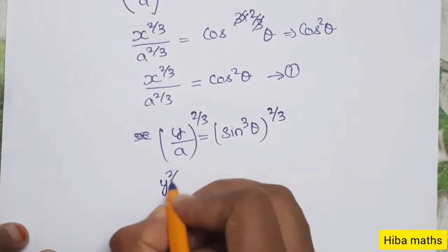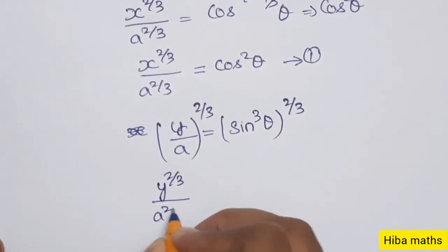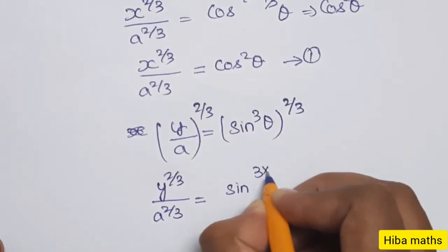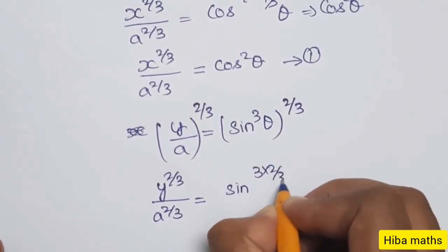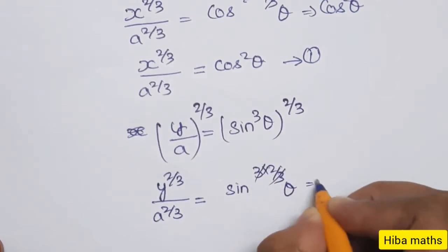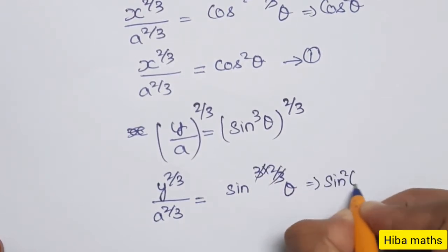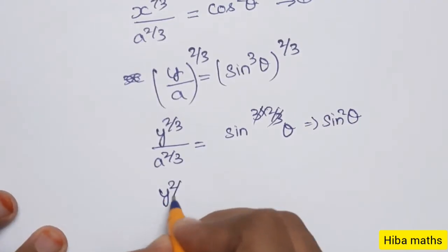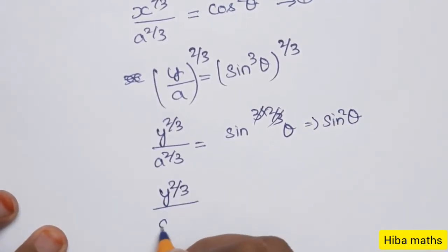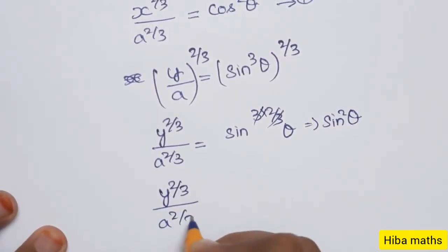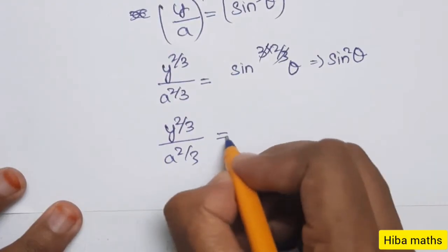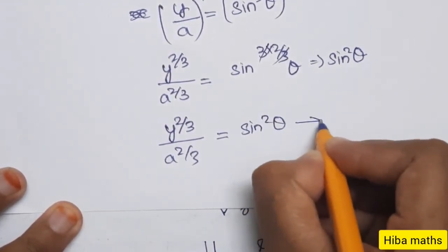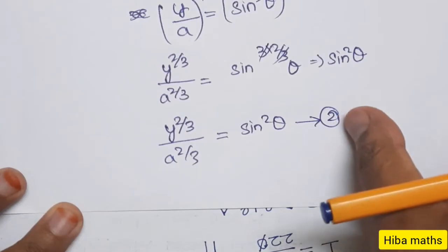Similarly, y^(2/3) / a^(2/3) = sin³θ raised to 2/3. The 3s cancel, giving sin²θ. Therefore, y^(2/3) / a^(2/3) = sin²θ. This is the second equation.